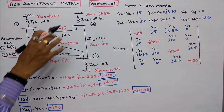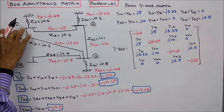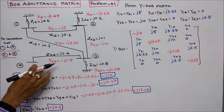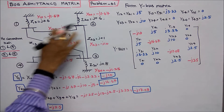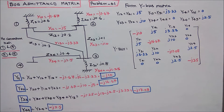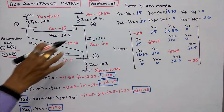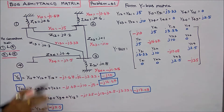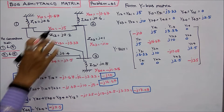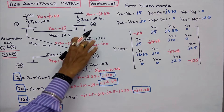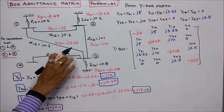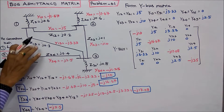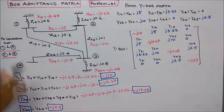The system consists of four buses and four lines, giving us a four-by-four matrix. The line values are given in impedance in per unit: Z12 = j0.2, Z23 = j0.1, Z34 = j0.4, Z13 = j0.3.